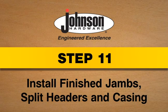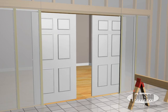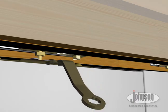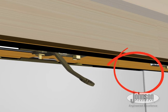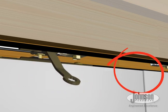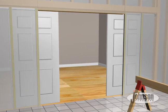Step 11. Install finished jams, split headers, and casing. Slide doors together to make sure they close correctly. Adjust equally if necessary. Once doors close and open correctly, you can now install the finished jams.